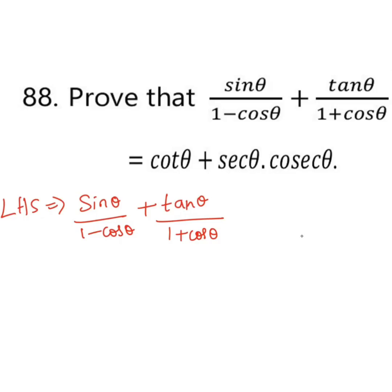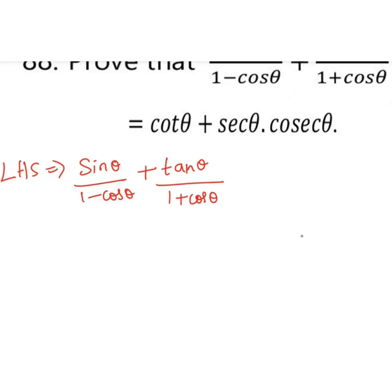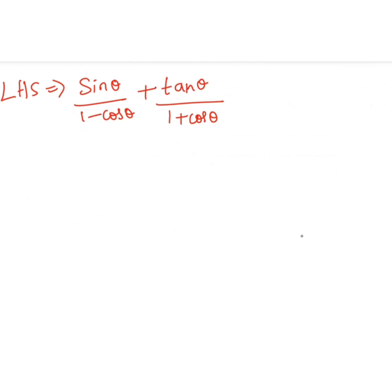LHS equals sin θ divided by (1 minus cos θ) plus tan θ divided by (1 plus cos θ). What we can do is take an LCM and do cross multiplication.